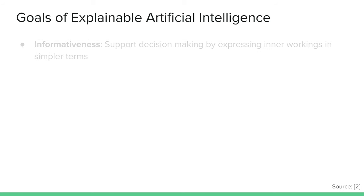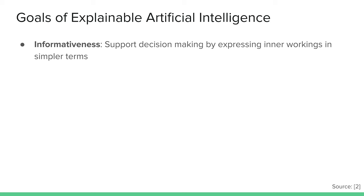Coming from that clip of Big Hero 6, what are the goals we want to achieve with explainable artificial intelligence? We would like to be informed — that helps us make decisions based on the inner workings in simpler terms. The modeled problem often is not equal to the problem humans have to solve, so explanations of how the machine worked can really help us understand the underlying problem better.